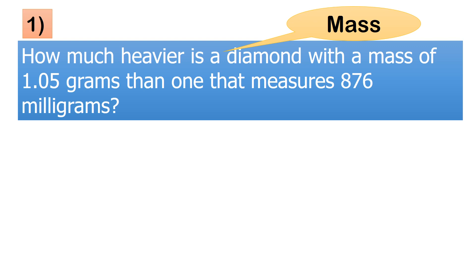A problem regarding mass: How much heavier is a diamond with a mass of 1.05 grams than one that measures 876 milligrams? So, this time, madali lang naman sanang isolve yung problem na ito. All we have to do is just subtract 1.05 by 876. But if you notice, yung first diamond natin, ang unit niya ay gram, and the second diamond, ang unit niya ay milligram. So, we cannot subtract directly.